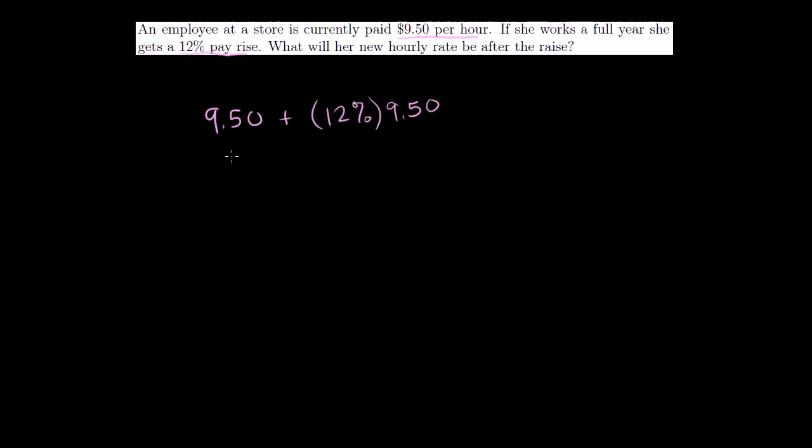Well, we could view it this way. This is the same thing as 9.50 plus 0.12 times 9.50. This is the same thing as 1 times 9.50 times 0.12 times 9.50. So this is the same thing as 1.12. I'm just adding that and that to get that times 9.50. We are growing 9.50 by 12%. You already have the 9.50 plus another 12%. It's 1.12 times 9.50 is going to be equal to our new number. Let me multiply this out just to make up for me using the calculator the last time. So 9.50 times 1.12.